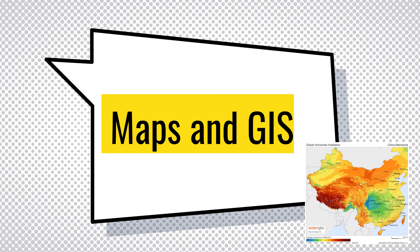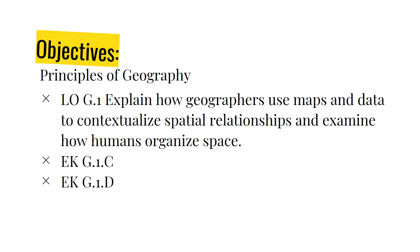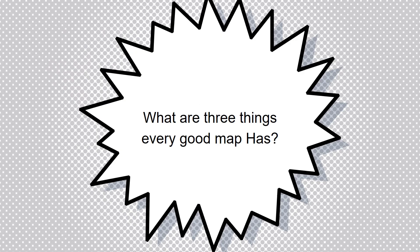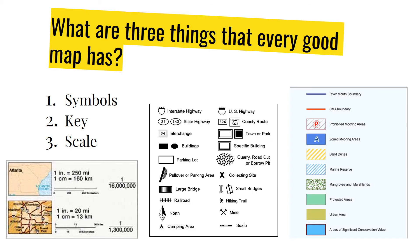Maps and GIS — geographic information systems. The objective here is the principles of geography once again. What are three things every good map has? Every good map has symbols, it has a key, and it has scale, just like we discussed earlier.